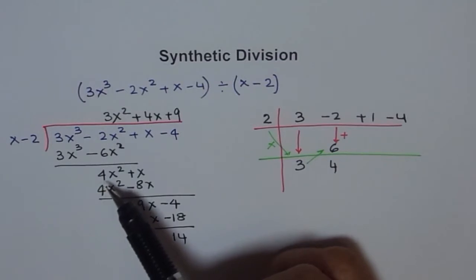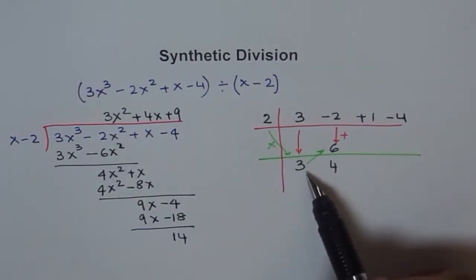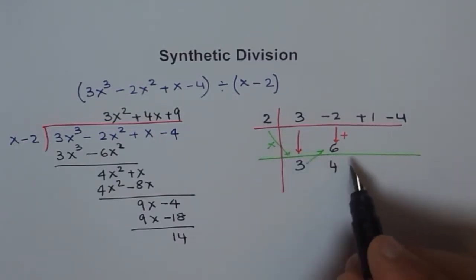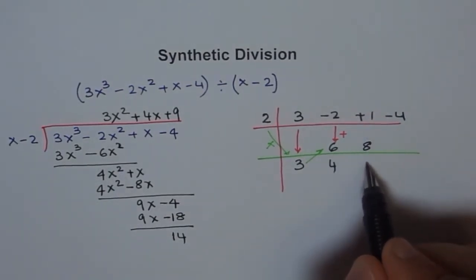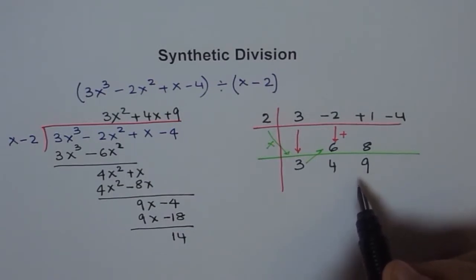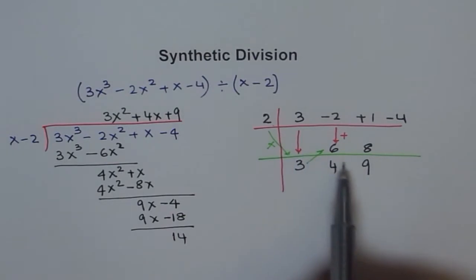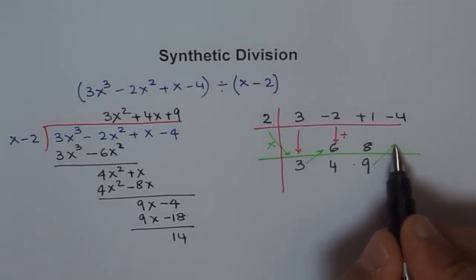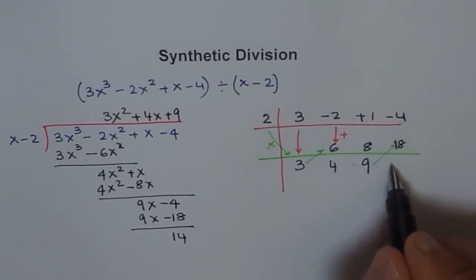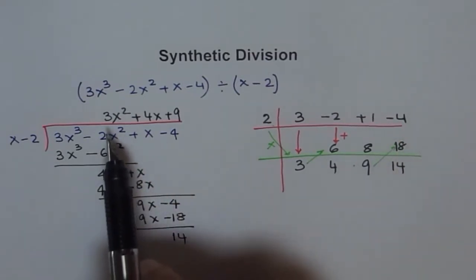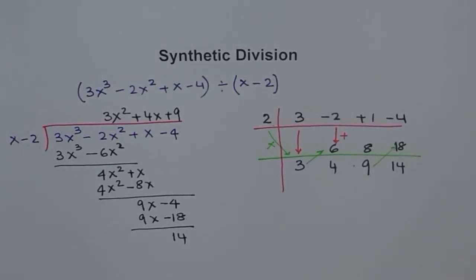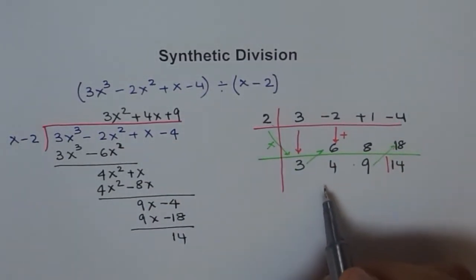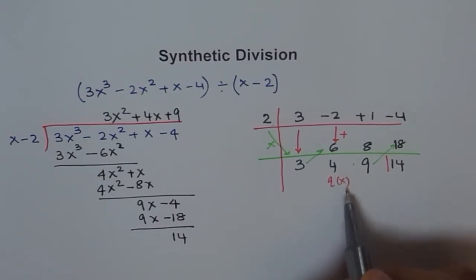Next, multiply 2 by 4 to get 8 and write it under the next column. Adding 1 and 8 gives 9. Then multiply 2 by 9 to get 18, write it under minus 4, and add to get 14. So we have the values 3, 4, 9, and 14 — the quotient coefficients are 3, 4, and 9, and 14 is the remainder.